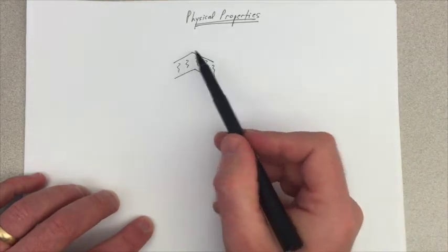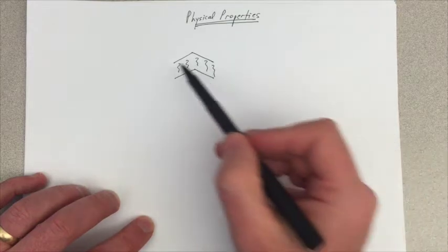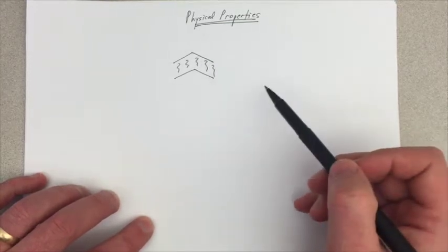And so that's the pattern that exists when we think about melting points and boiling points with alkanes. It's really the longer the molecule is, the higher the melting point.